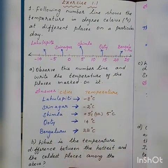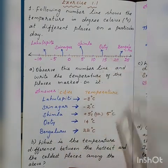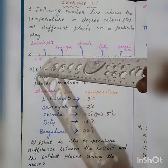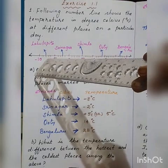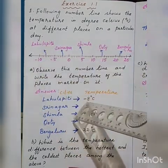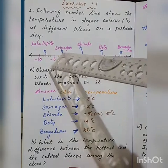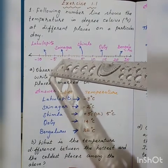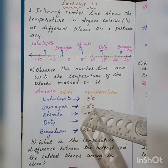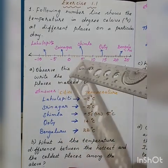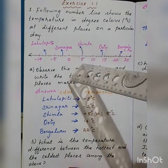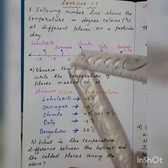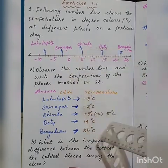Lahaul Spiti — the 5 cities and their temperatures. Lahaul Spiti: the points before it are minus 5, minus 6, minus 7, and Lahaul Spiti is minus 8 degree Celsius. Srinagar: zero, then before minus 1, then before minus 2 — so minus 2 degree Celsius is Srinagar's temperature. And 5 degree Celsius is Shimla's temperature. The right side of integers are all positive integers, so 5 degree Celsius is Shimla's temperature.